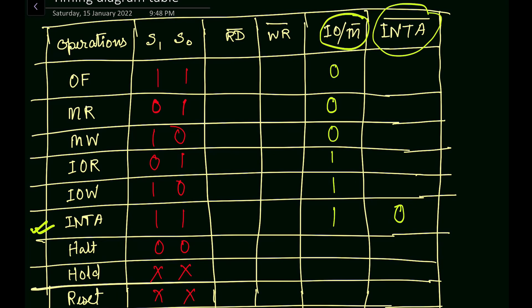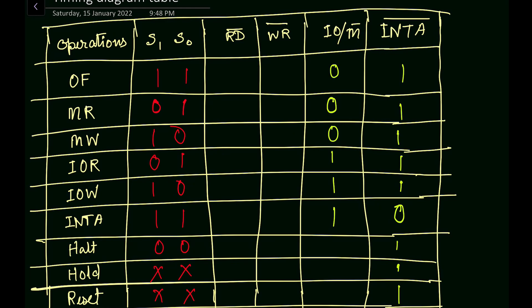I will make separate videos for the opcode fetch, memory read, memory write, input/output read, and input/output write operations. The INTA signal in the last column will be one for all other operations except interrupt acknowledgement — since it is active low, it is zero only during INTA. For halt, hold, and reset operations, the IO/M bar signal is in a high impedance state, denoted by Z.